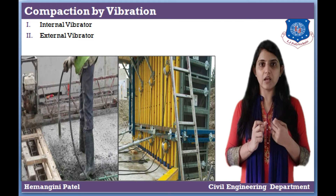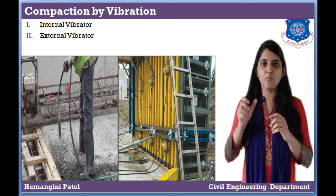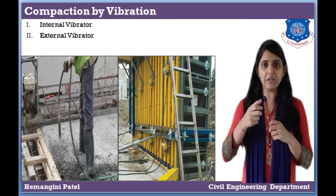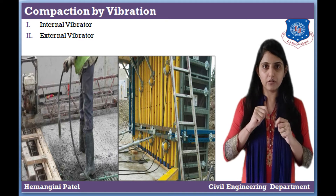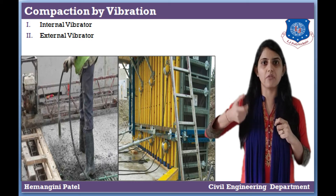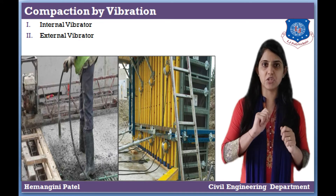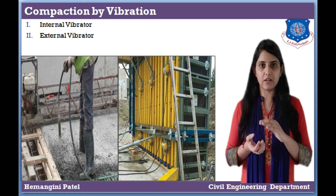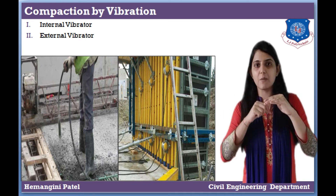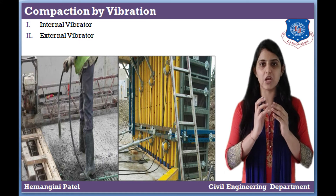In needle vibrators, there is a needle connected to a movable shaft. That shaft connects with an electric motor, which moves either by air pressure. We insert that needle into the concrete vertically. When the electric motor rotates, the shaft vibrates the needle, causing compaction. When providing compaction, we keep precautions: there are new layers and old layers. The new layer will be penetrated with the needle so that both layers are homogeneously compacted.